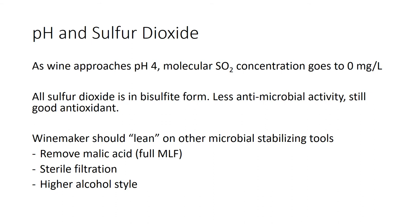At high pH, a winemaker could lean on other microbial stabilizing tools instead of SO₂. For red wines or some white wine styles: remove malic acid as a food source for spoilage microbes by going through full MLF, utilize modern sterile filtration, and rely on the fact that those ripe red styles often have high enough alcohol that spoilage microbes are suppressed.